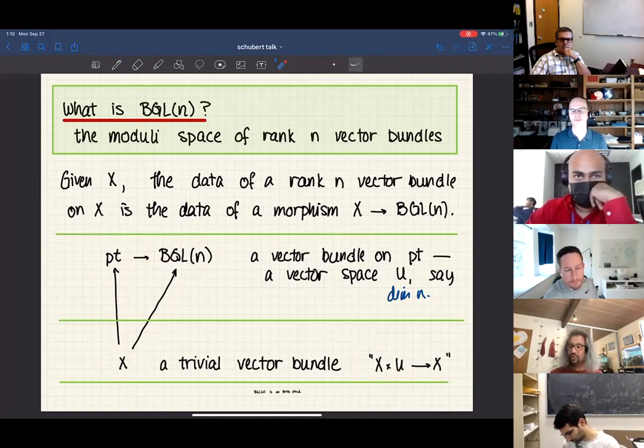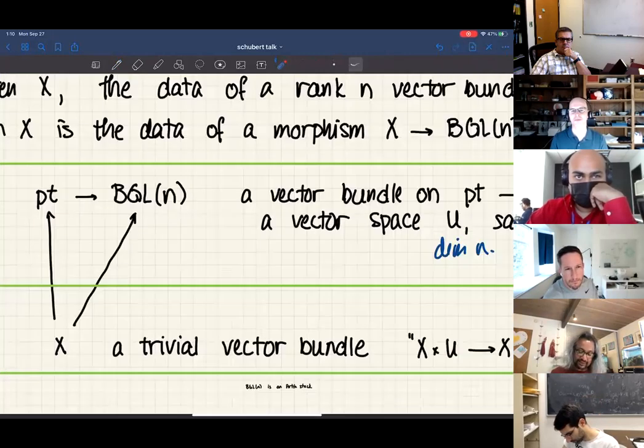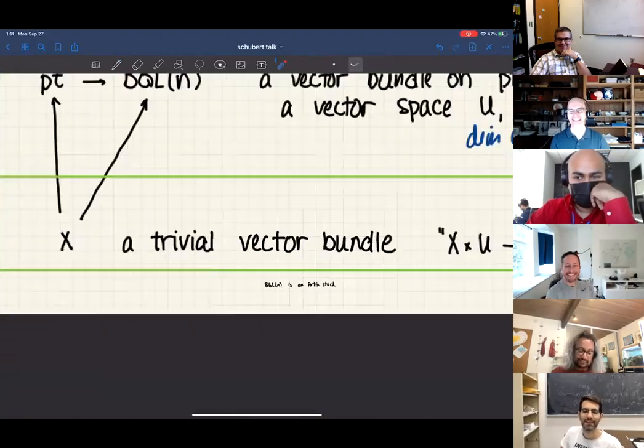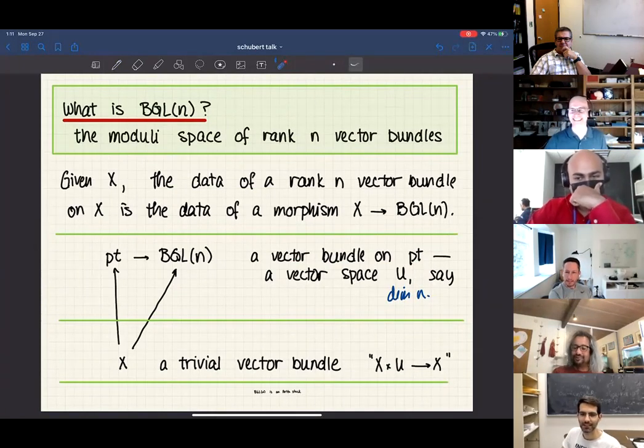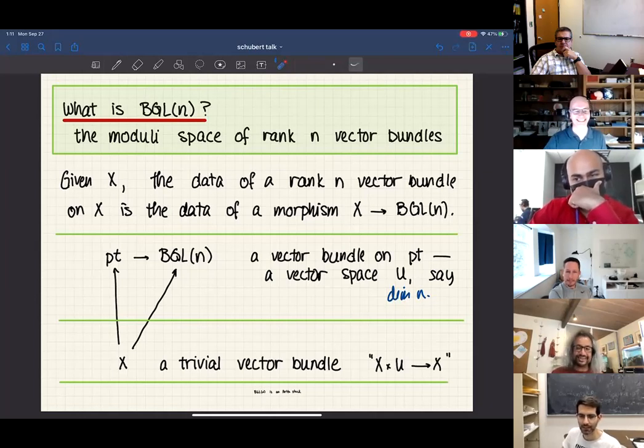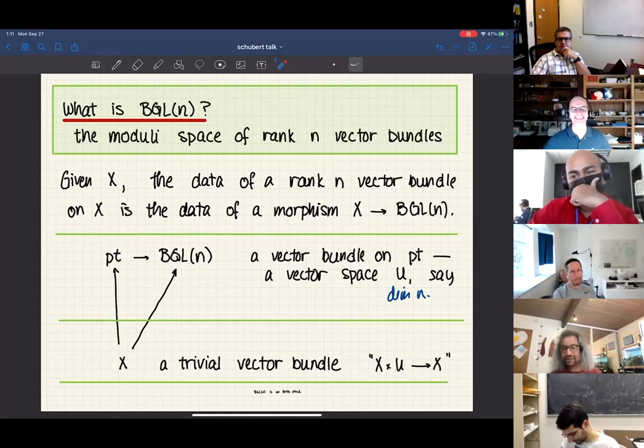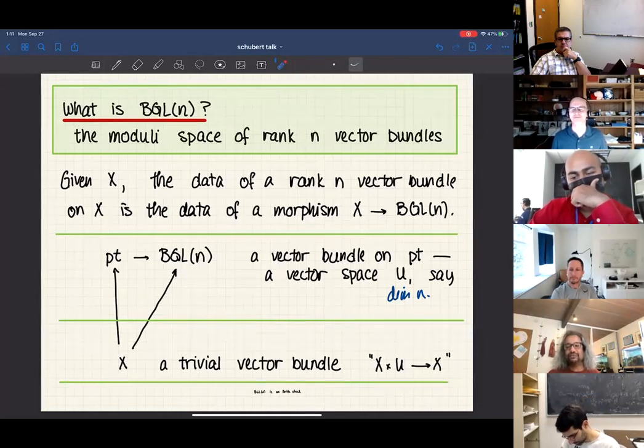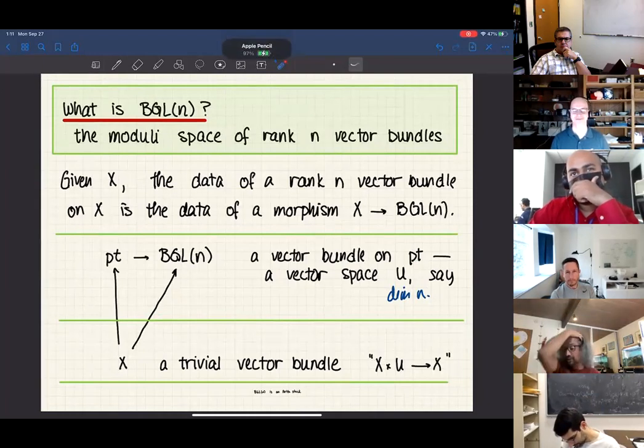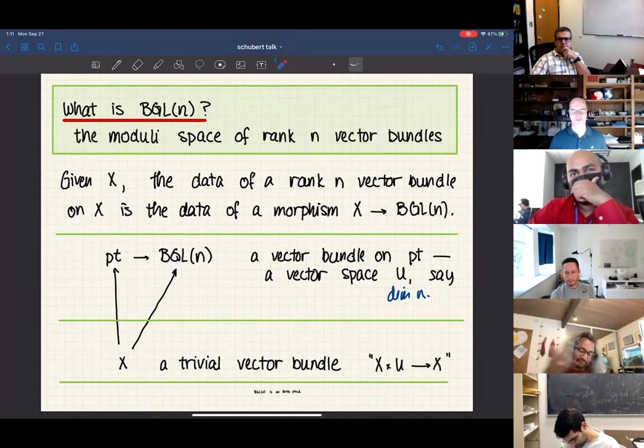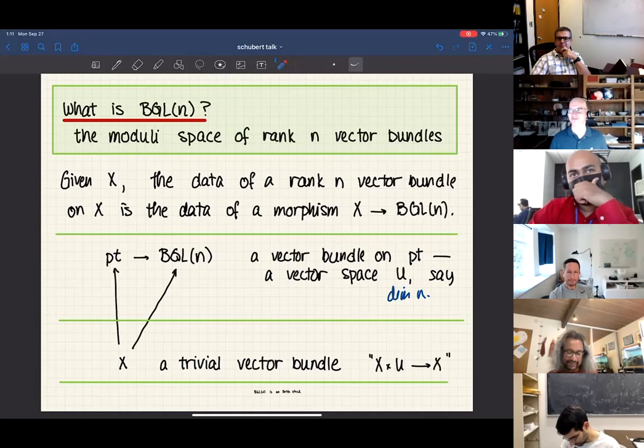If you ask me a little more what I mean by space, I would say BGLN is an Artin stack, but don't let that slow you down. If you think that should cause you concern, just stop and ask me. It's a space. It has a topology. If you're over the complex numbers, it can have a homotopy type. If you're over a field, it can have a Chow ring. Don't worry about the fact that it's not a variety in the same way that an algebraic geometer tells a differential geometer don't worry about what a variety is.